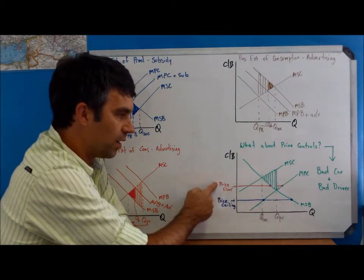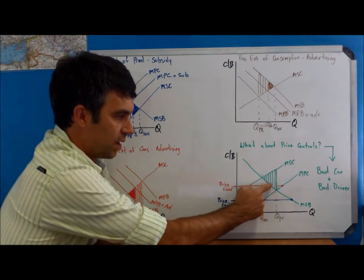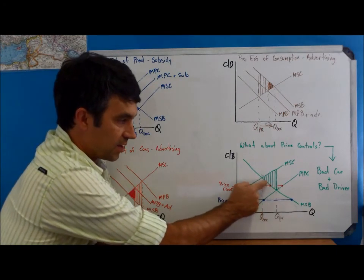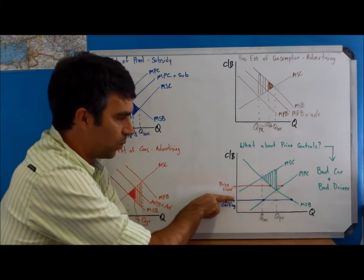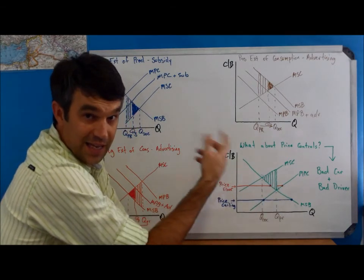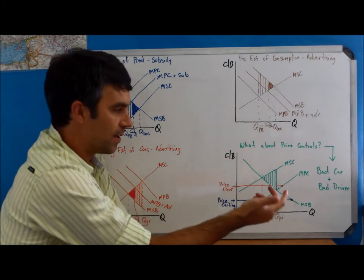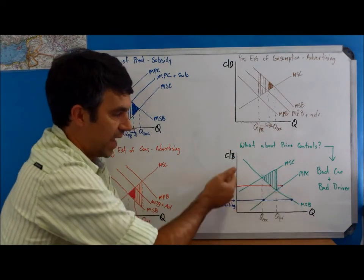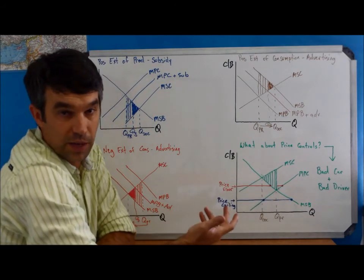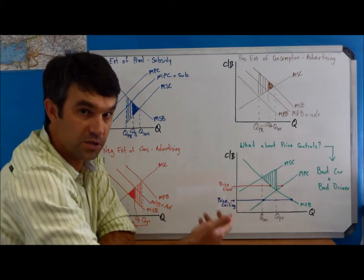Well, remember when we set a price floor, it's not only going to affect consumers. It's also going to affect suppliers. So we would raise the price of cigarettes. And yes, less people would smoke. But at the same time, there would be this surplus because at a higher price, suppliers are more willing and able to produce cigarettes.